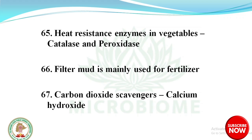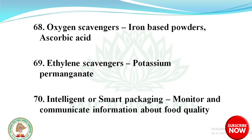Filter mud is mainly used for fertilizer. Carbon dioxide scavengers: calcium hydroxide. Oxygen scavengers: iron-based powders and ascorbic acid. Ethylene scavengers: potassium permanganate. Intelligent or smart packaging is used to monitor and communicate information about food quality.